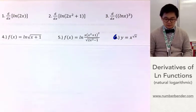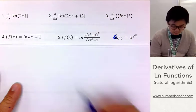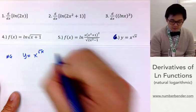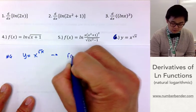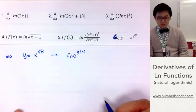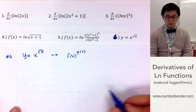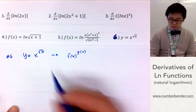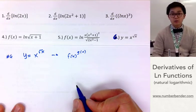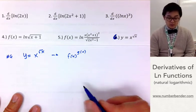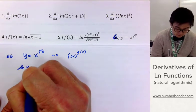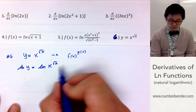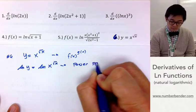For number 6, it's a little different from the rest because we have y equals x raised to the square root of x. This is an example of the derivative for a function raised to another function — not e to the u · du/dx, and not a constant raised to a power. What we can do is multiply both sides by ln, so we'll have ln(y) equals ln of x raised to the square root of x.